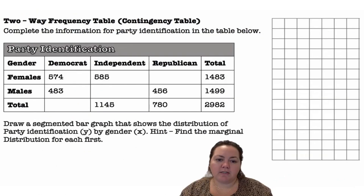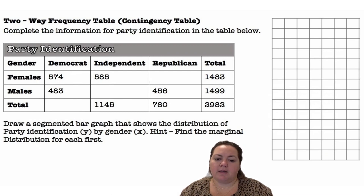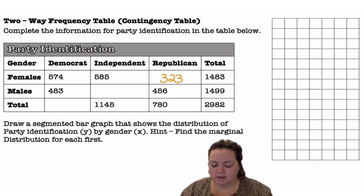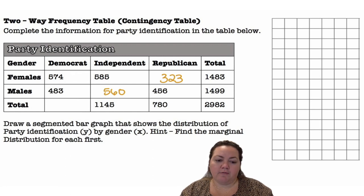A two-way frequency table, also called a contingency table. Complete the information for the party identification in the table below. So we have males and females, Democrat, Independent, Republican, and we're going to fill in the missing pieces. There were 1,483 total females, so subtracting the other two female values leaves 323. And 1,145 total independents — subtracting 585 gives 560.